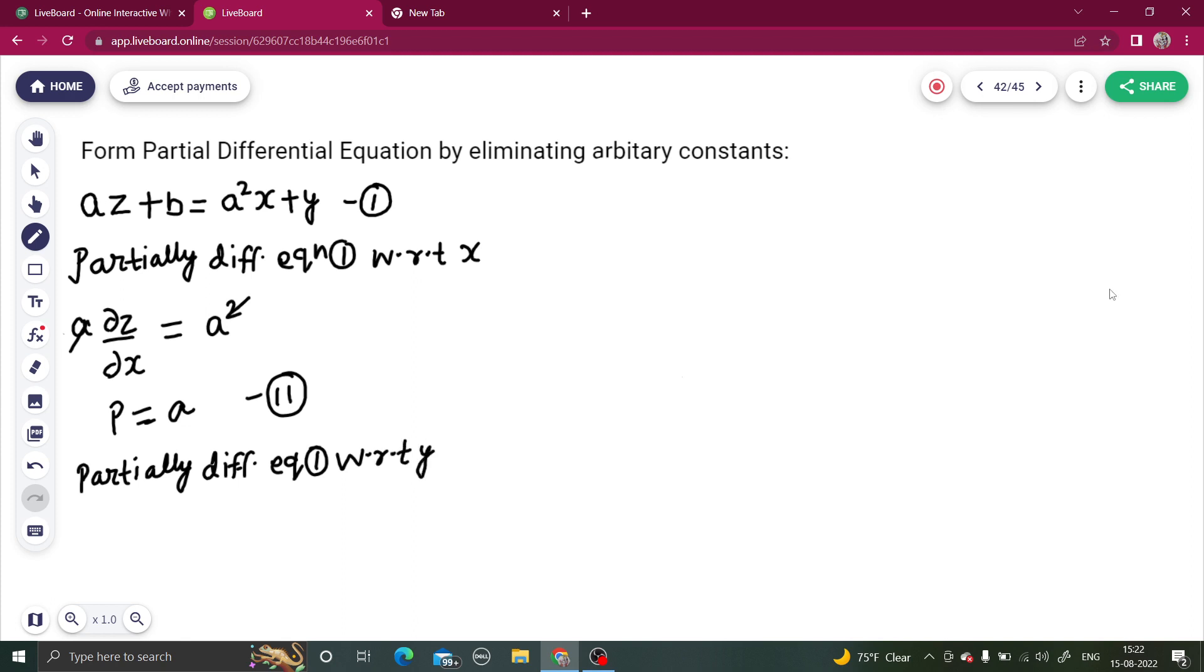Partially differentiate equation one with respect to y, with x as constant. So you will get ∂z/∂y. Derivative of b is again 0. A squared x derivative is 0 and derivative of y is 1. So from here you are getting a times q equals to 1.